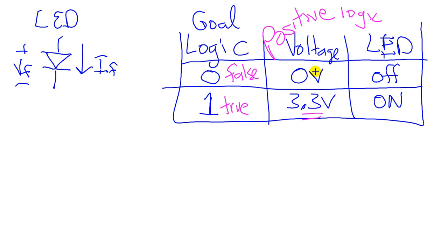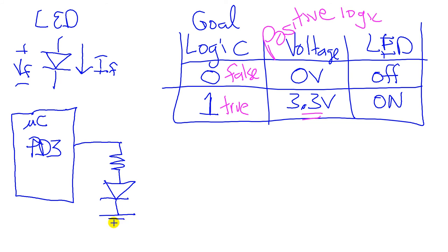Now we need to build it. We're going to take a different pin. For the input we used PD zero, for the output we're going to use PD three. This is our microcontroller here. And we want to have the circuit such that when the output is high, the LED comes on.